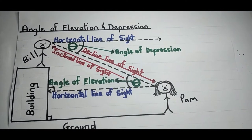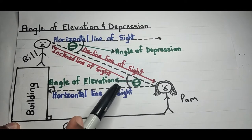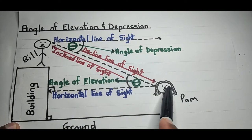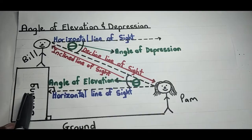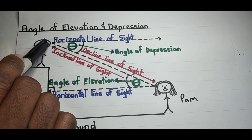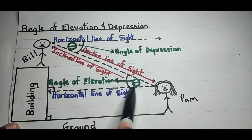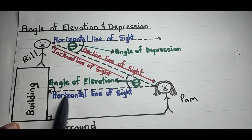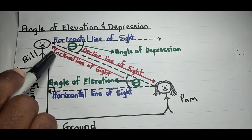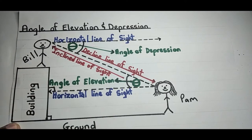The angle of elevation is the angle formed when Pam is looking horizontally at the building versus when she's looking at Bill at the top of the building. It's the angle that forms between the horizontal line of sight and the inclined line of sight.